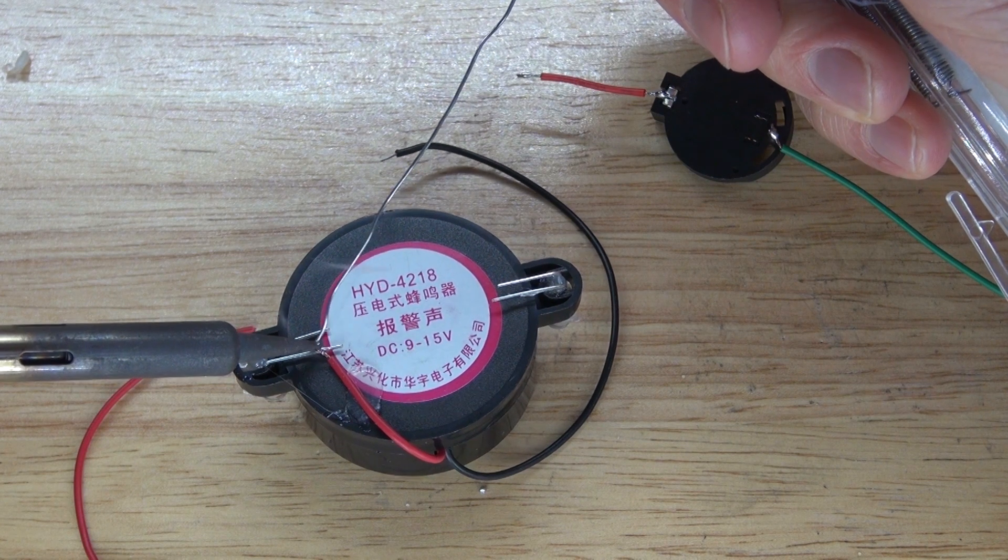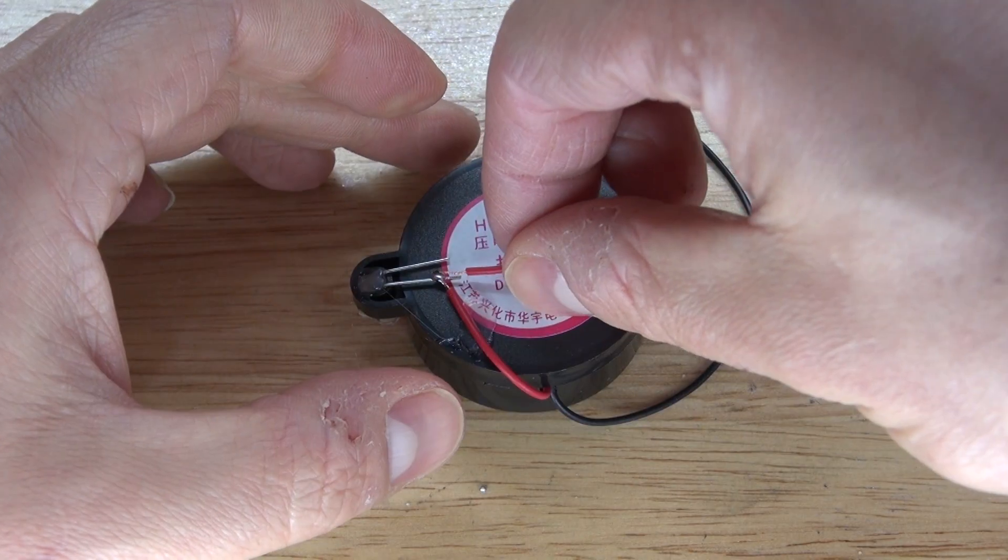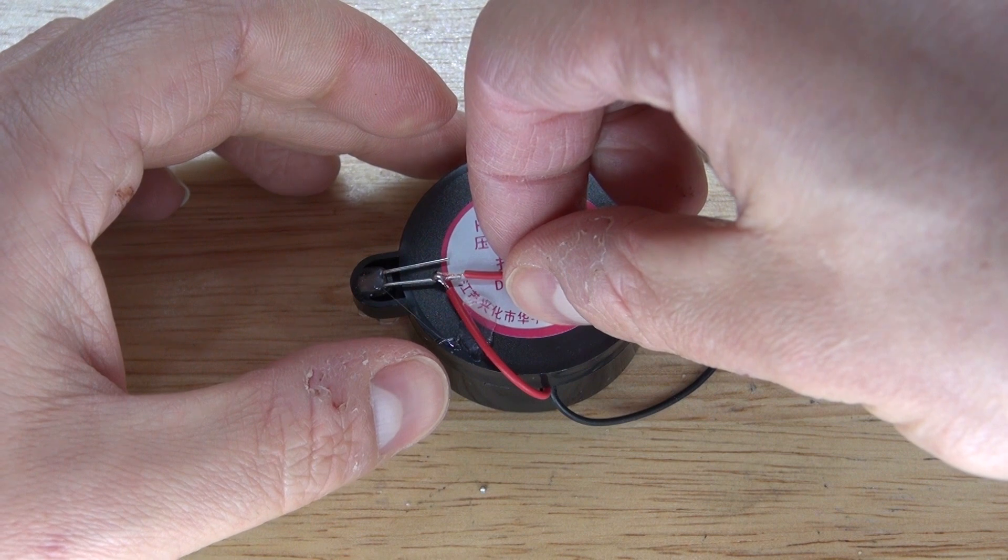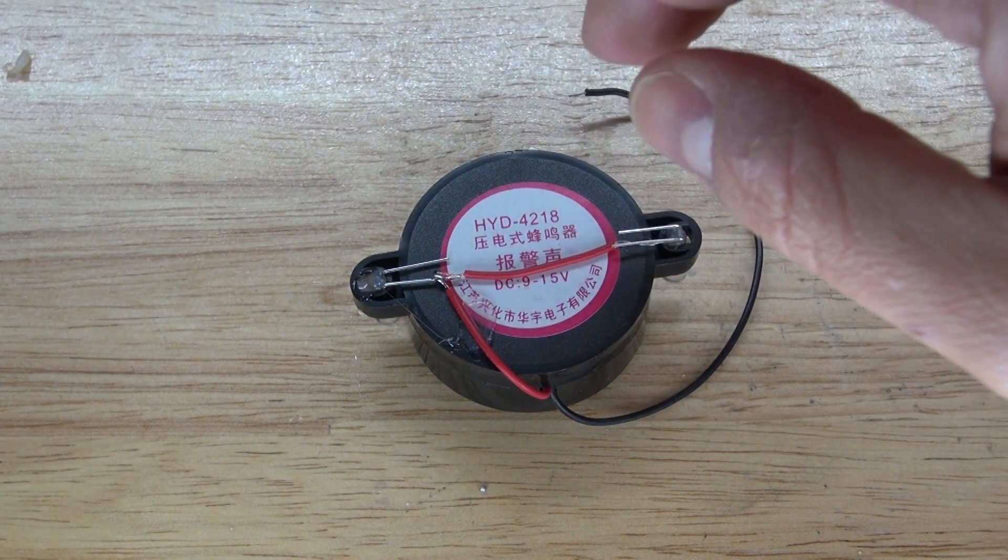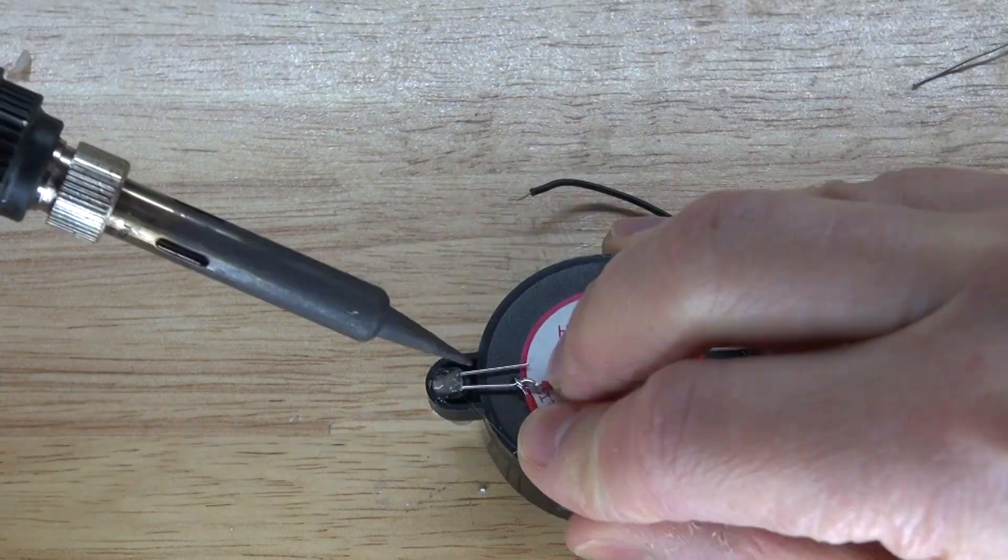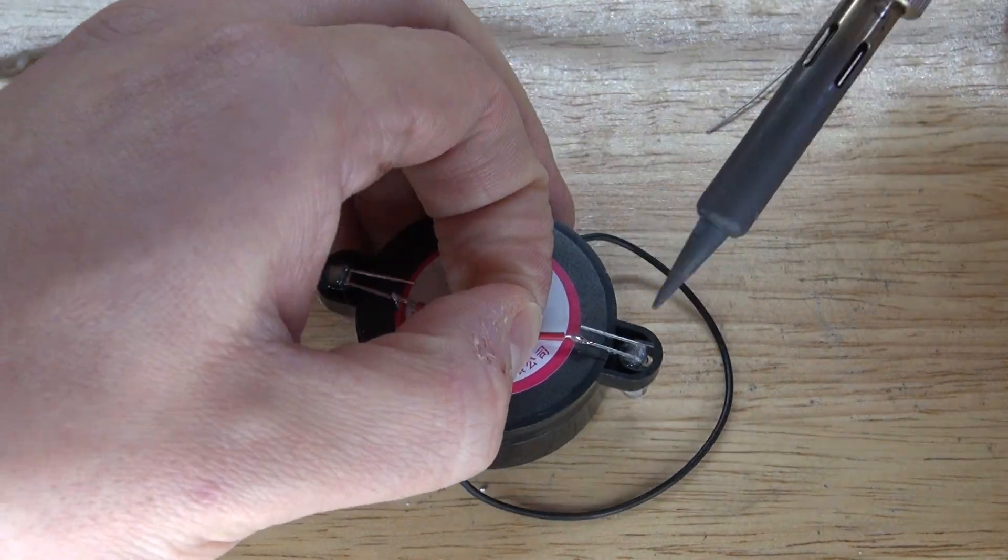Next I'm going to solder the positive wire from the buzzer to the anode of the LED. Then I'm going to take a positive wire and I'm going to bridge both of the anodes of the LEDs together, just like this.